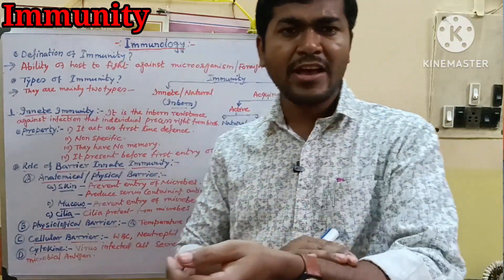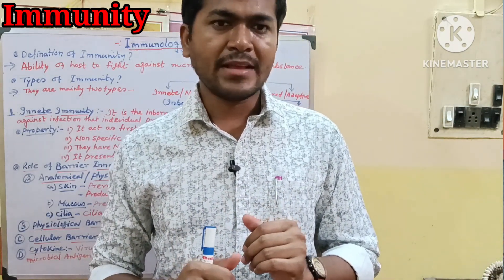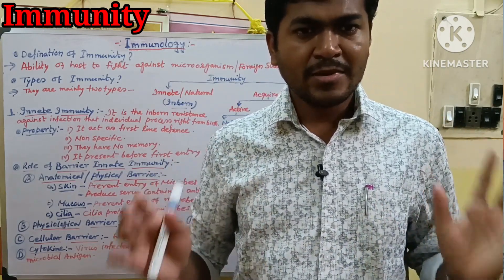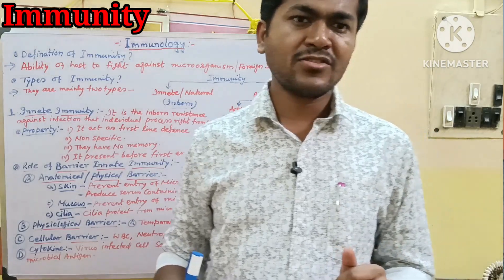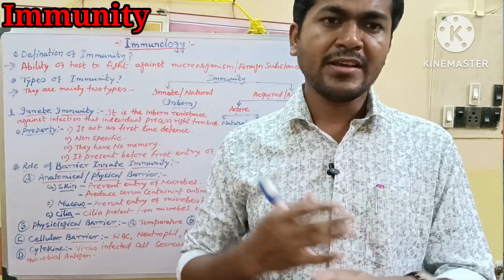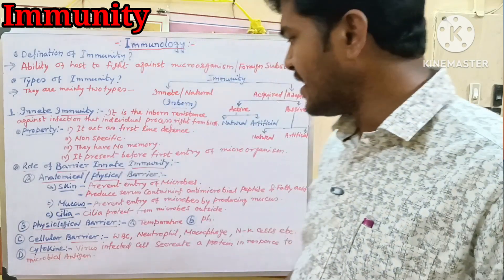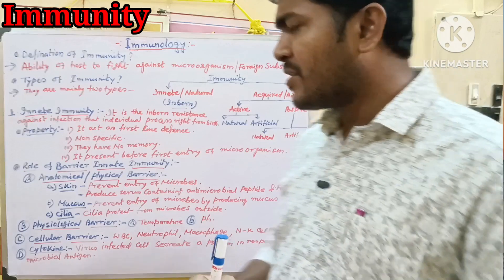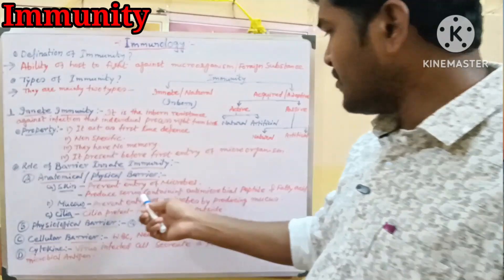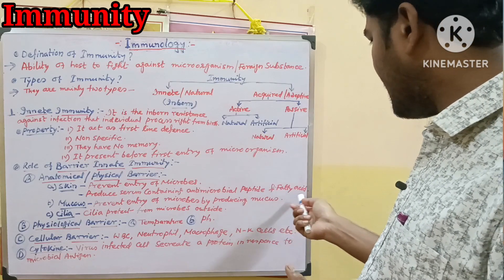We are talking about the environment of the human being. We have around 1000 micro-organisms on our skin. The protective skin of our body acts as a barrier against these micro-organisms.